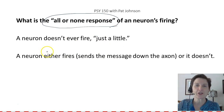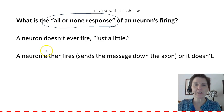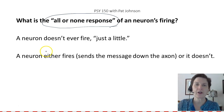In this mini lecture, we've looked at the parts of a neuron, looked closely at the myelin sheath and what it does, and talked about the all-or-none response of a neuron firing. I'll see you next time.